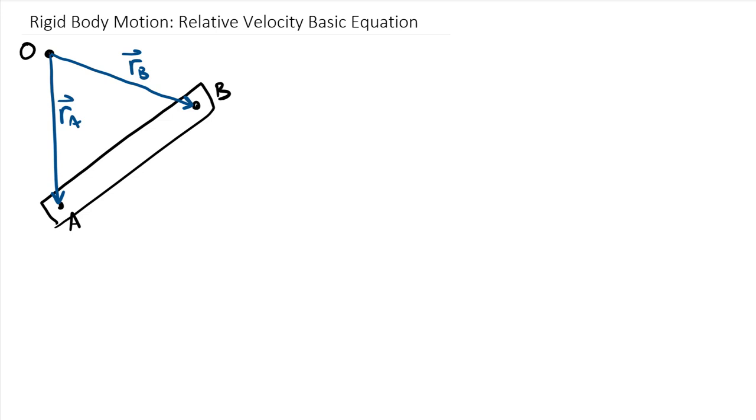And then a third position vector that connects the two, and this one will be relative because it's between two moving points, instead of from a fixed point to a moving point. This is going to be R of B relative to A, the position vector of B relative to A.